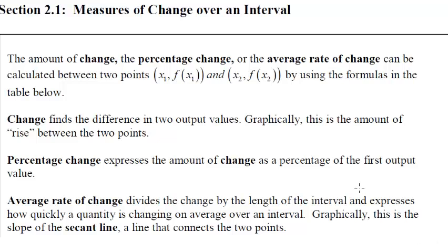In section 2.1 we're going to look at three different measures of change over an interval. The first is change, the second is percent change, and the third is average rate of change.